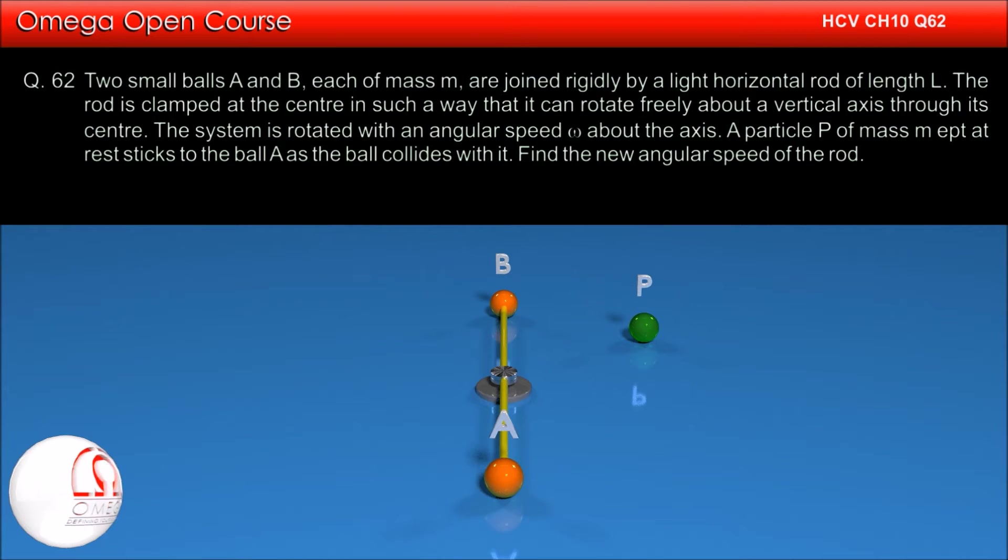Two small balls A and B, each of mass M, are joined rigidly by a light horizontal rod of length L. The rod is clamped at the center in such a way that it can rotate freely about a vertical axis through its center.